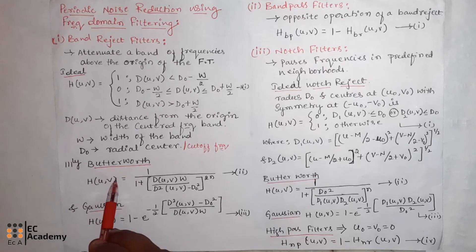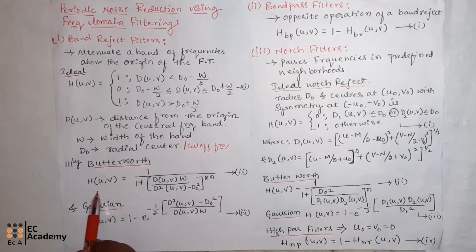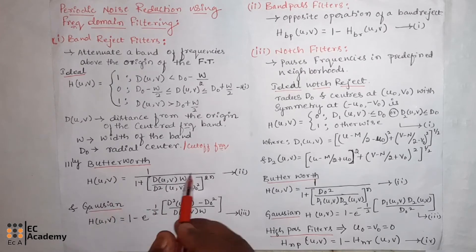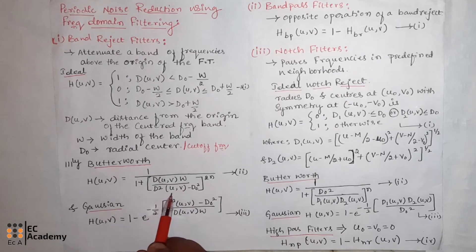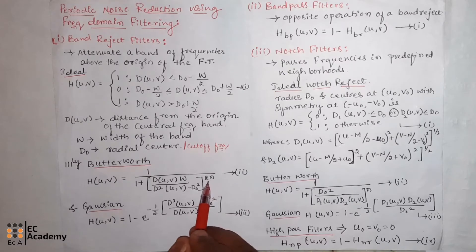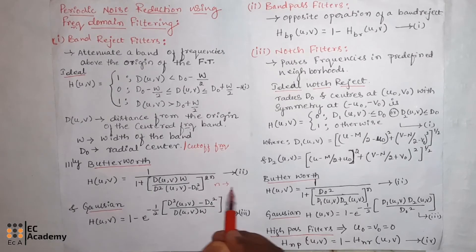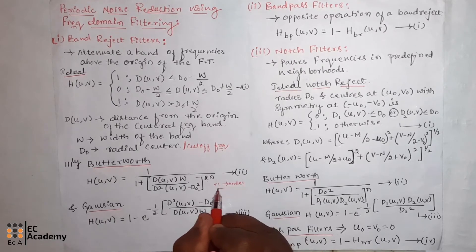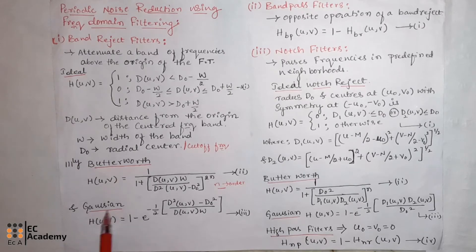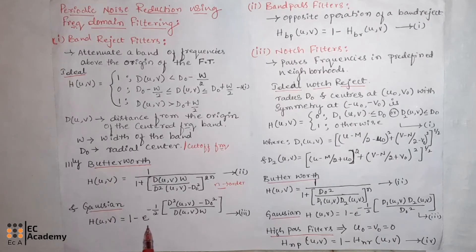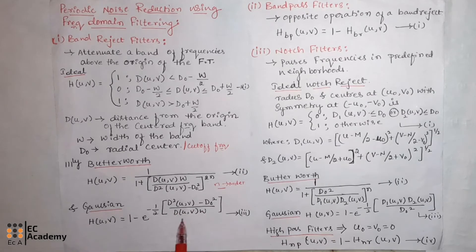Similarly, the Butterworth band reject filter is given as: h(u,v) = 1 divided by 1 plus [d(u,v) times omega divided by d²(u,v) minus d0²] to the power of 2n, where n represents the order of the filter. A Gaussian band reject filter is given as: h(u,v) = 1 minus exponential to the power of minus 1/2 times [d²(u,v) minus d0²] divided by [d(u,v) times omega].